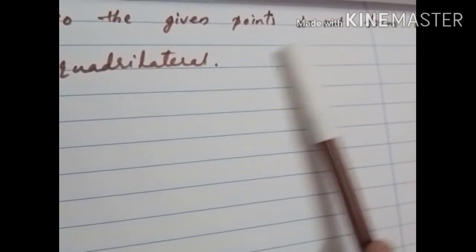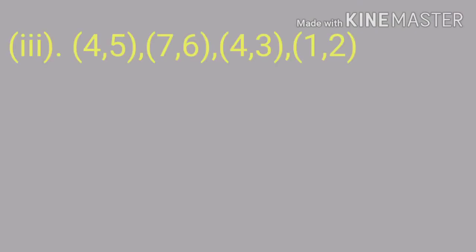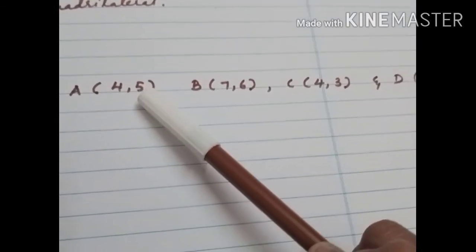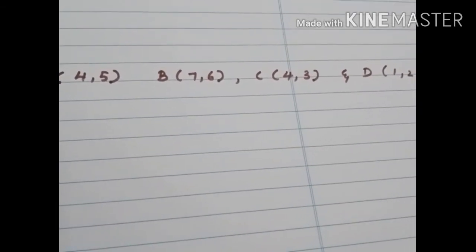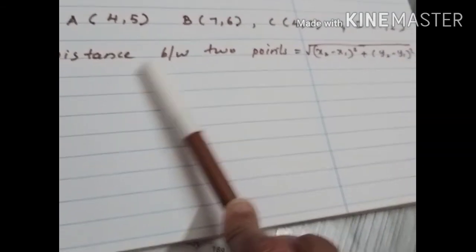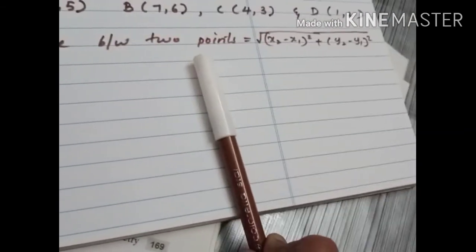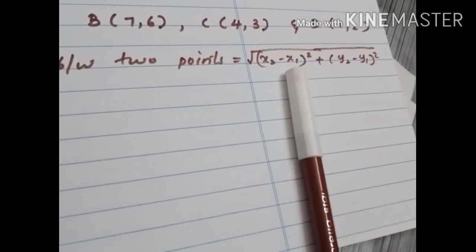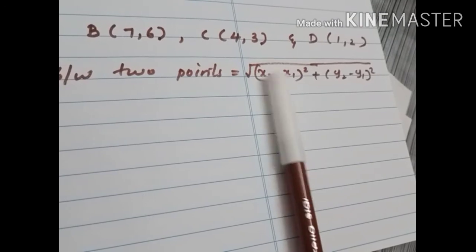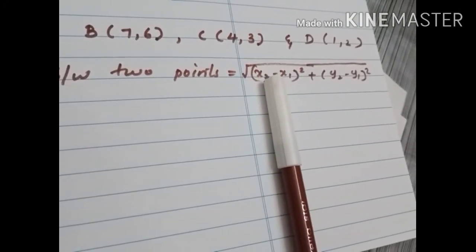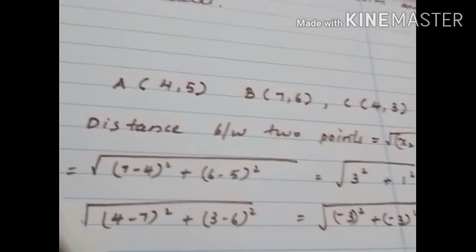Now the third sub-question. The points are given as (4, 5), (7, 6), (4, 3), and (1, 2). Let A(4, 5), B(7, 6), C(4, 3), and D(1, 2). Using the distance formula, we have to find the sides AB, BC, CD, and DA first.